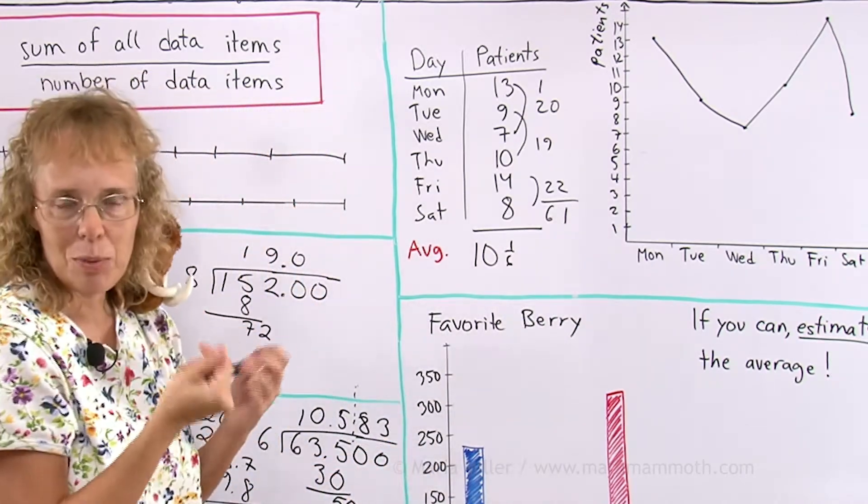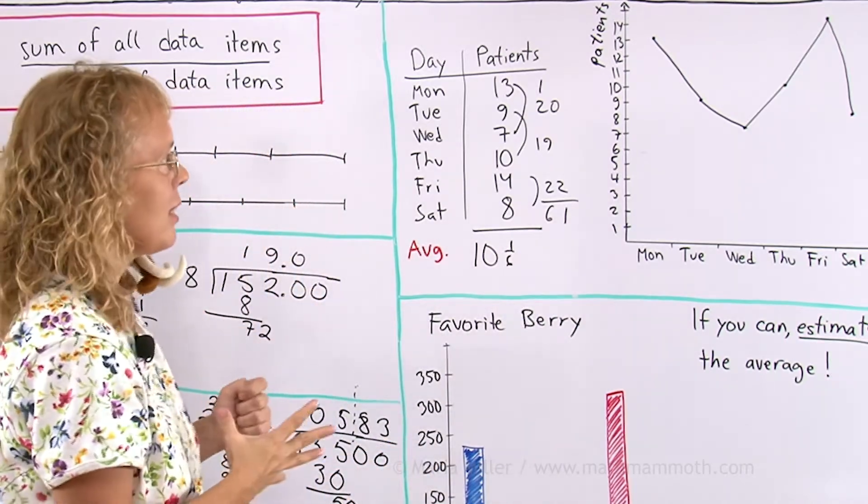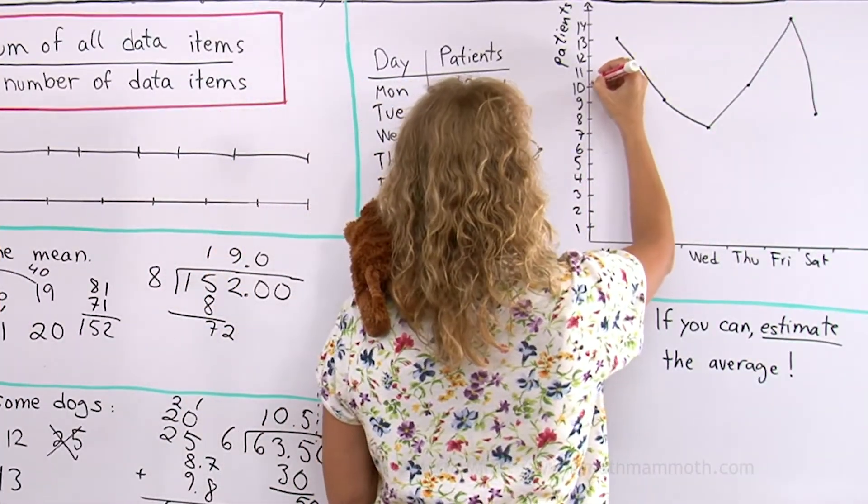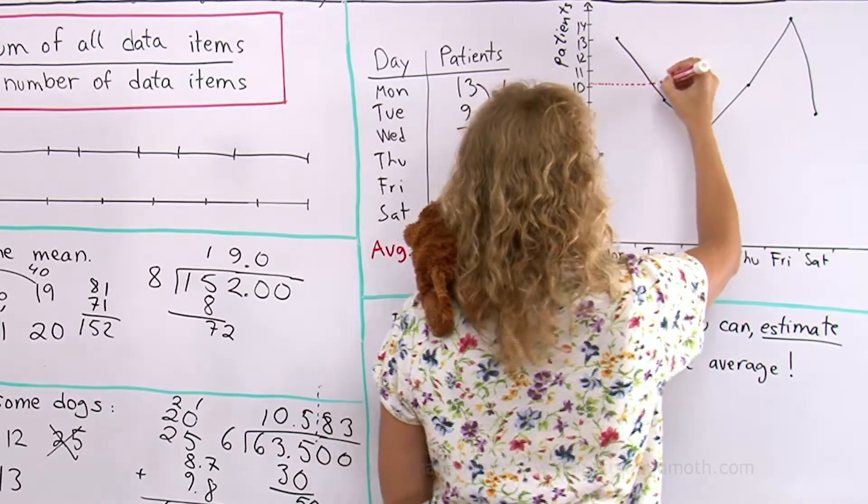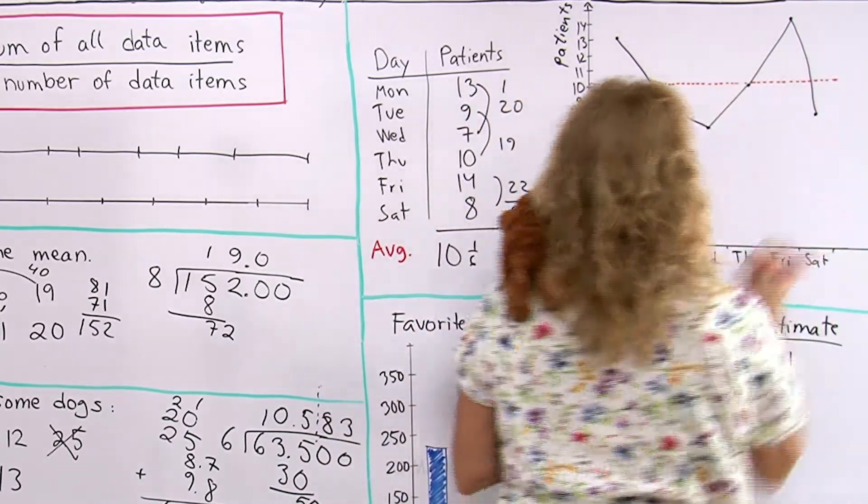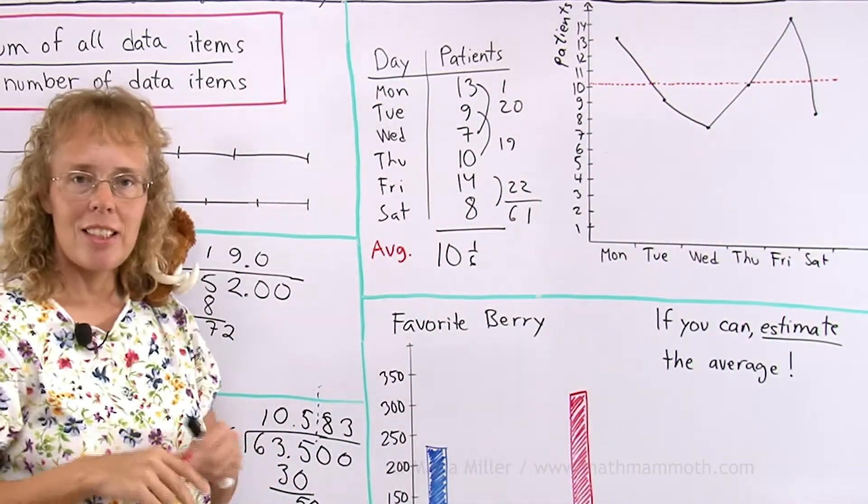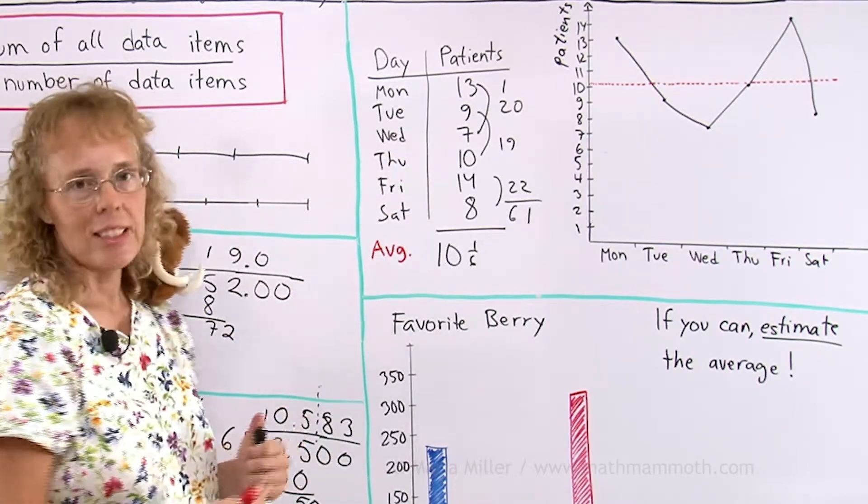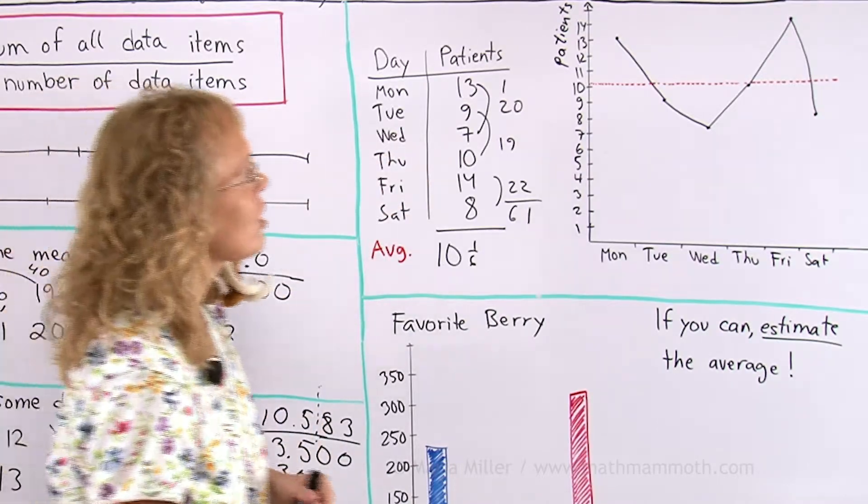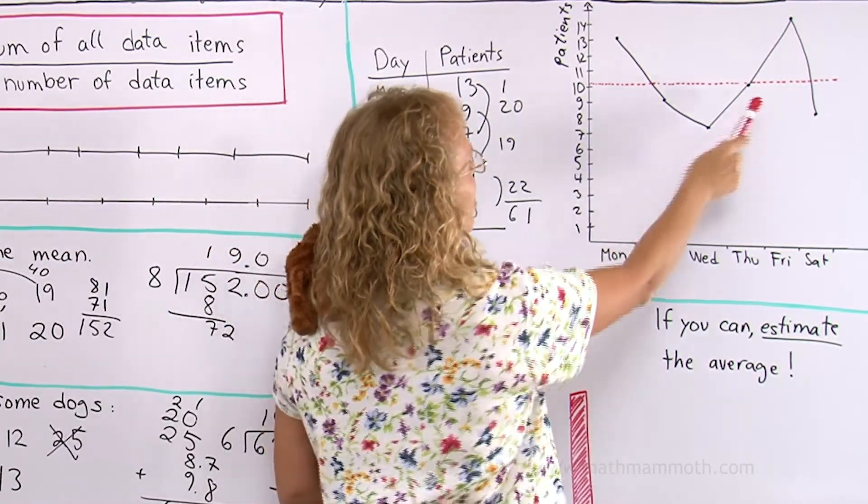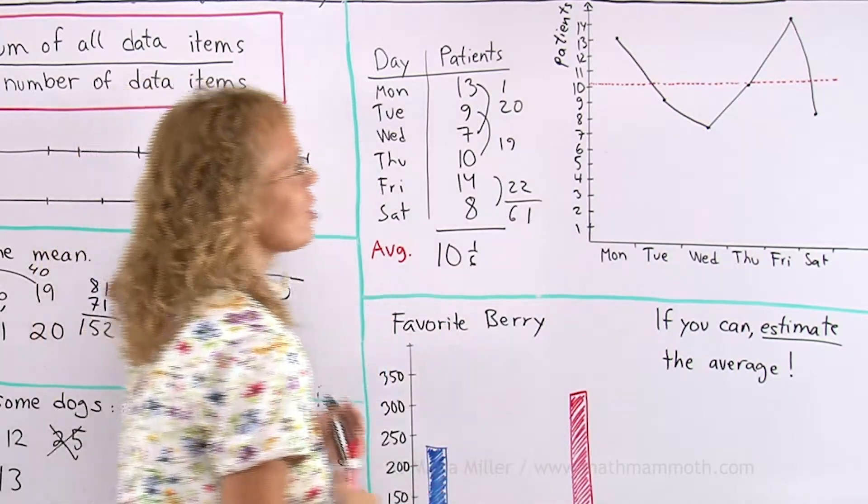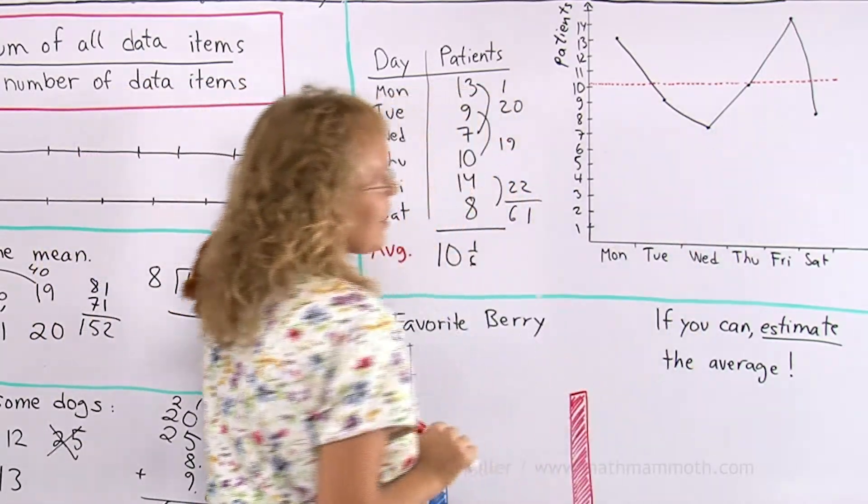And let me use a color. I can plot the average here as a line. And now you can clearly see which days he had more than average number of patients, which days he had less than average number of patients, or close to average. These two days were like peaks, way more than average. And then these two days were way less.